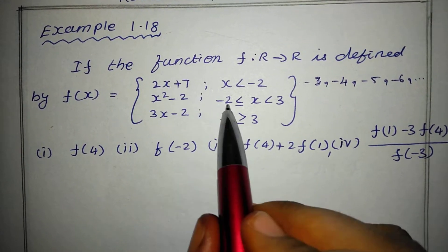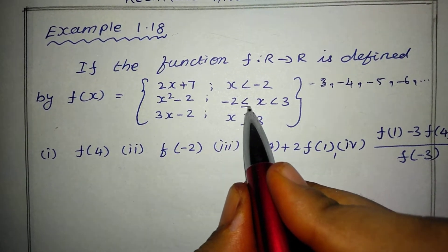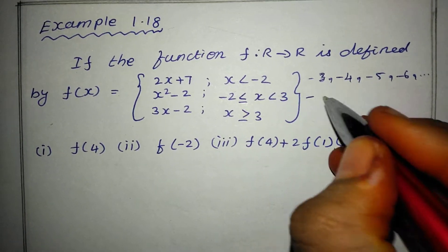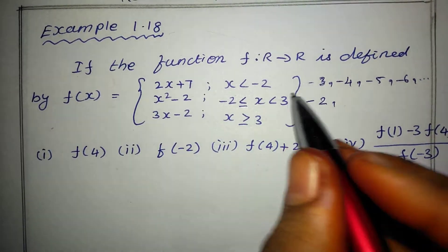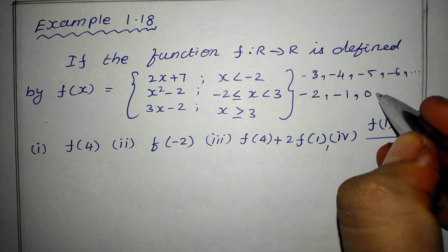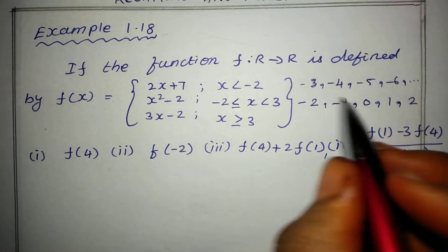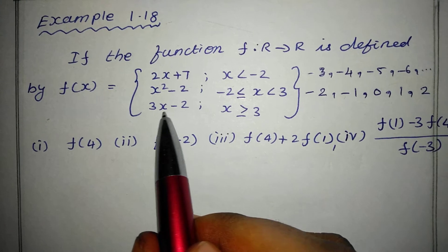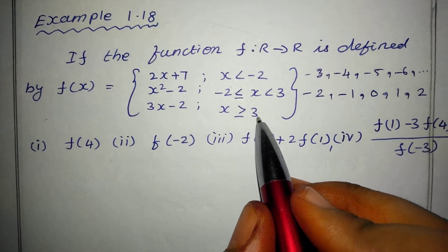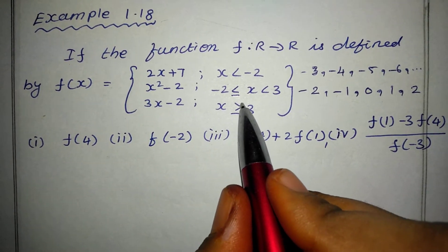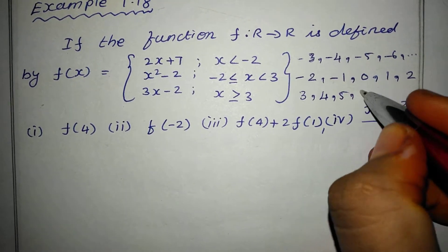And next, x is less than minus 2. So, minus 2 is less than or equal to x, meaning the second piece applies when minus 2 is less than or equal to x and x is less than 3. For the third piece, x is greater than or equal to 3, so 3, 4, 5, 6, 7, and so on — and that piece is 3x minus 2.